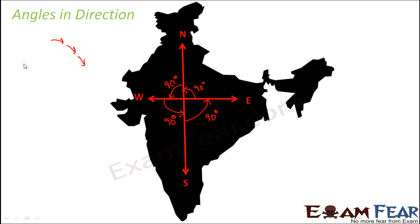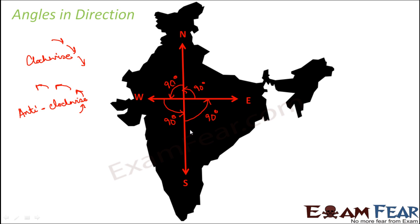Have you ever observed in which direction the hands of a clock rotate? They rotate in this direction — this direction is called clockwise, meaning like the clock. When something is moving in the opposite direction, that is called anti-clockwise. Moving clockwise by 90 degree from north you reach east; from east, 90 degree clockwise you reach south; from south, 90 degree clockwise you reach west; from west, 90 degree clockwise you reach north. So in case of direction, angle plays a very important role.